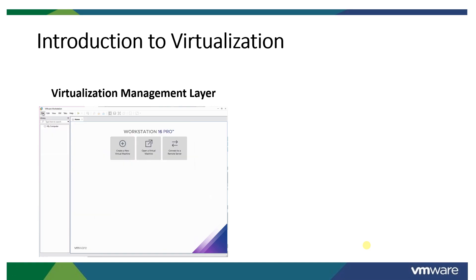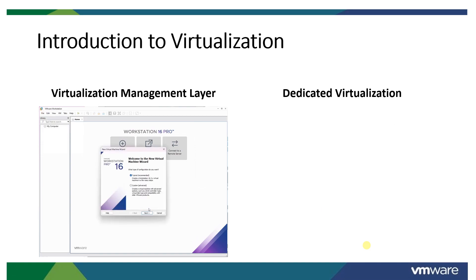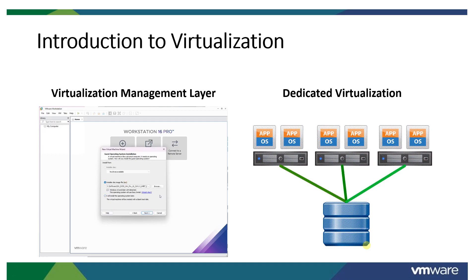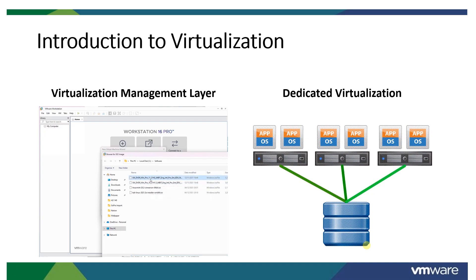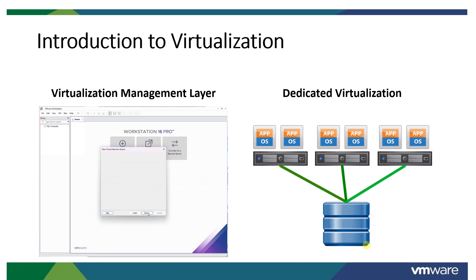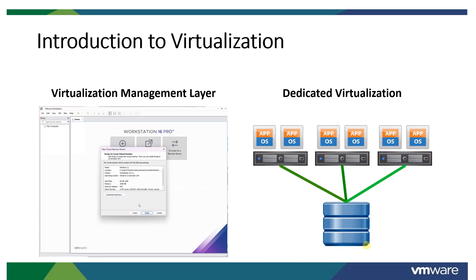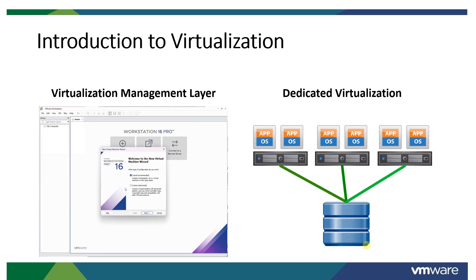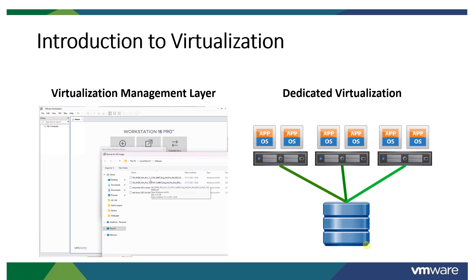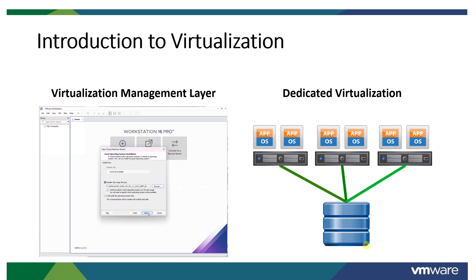The second type of virtualization is dedicated virtualization. There is no general-purpose operating system installed on the hardware — you cannot install Windows or Linux. On high-end hardware, you get VMware vSphere from VMware, which provides you ESXi. ESXi is an operating system dedicated only for virtualization, and for that reason it falls under the generic term hypervisor.